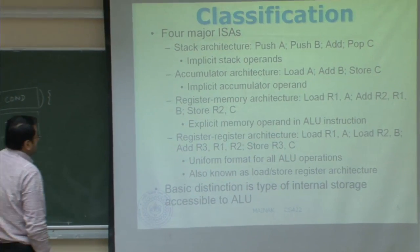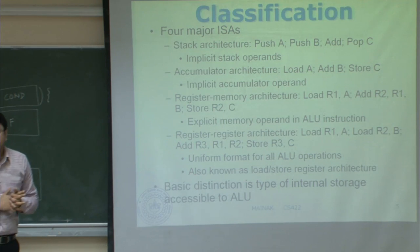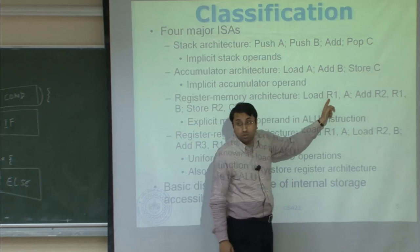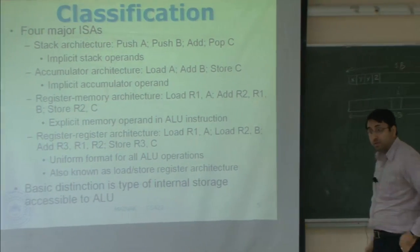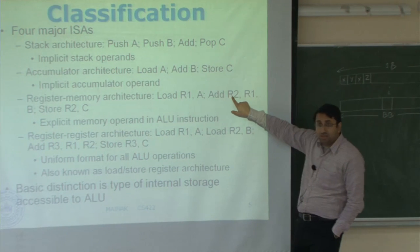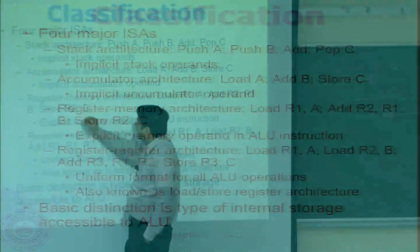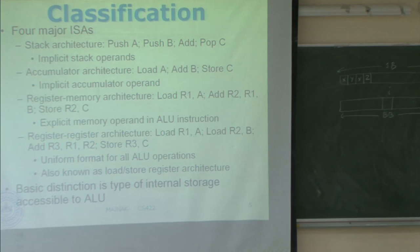Register-memory architecture allows operations to take register or memory operands. For c = a + b: load r1, a; then add r2, r1, b — this adds r1 (register) with memory operand b, placing the result in r2. So the destination is written first, followed by two sources. This is a combined register-memory operation. Then store r2, c picks the result from r2 and sends it to memory location c.